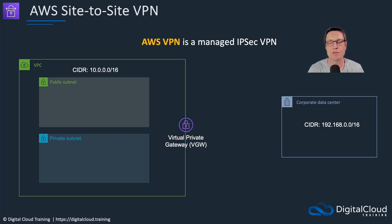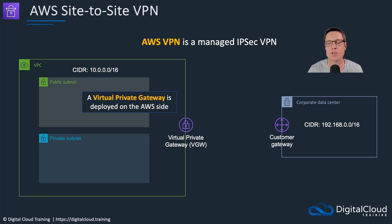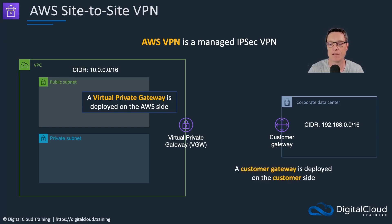With a VPN, we have something called a virtual private gateway, which is on the VPC side — a component that we create and deploy within our VPC on the AWS side. Then we have the customer gateway, which is essentially a configuration component that we create within our VPC. But the actual physical device is in the corporate data center and needs to be configured by the local admins there — so that's on the customer side.